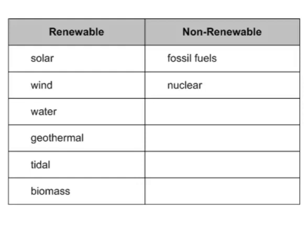Under renewables we have solar power — as long as the sun keeps shining, we've got solar power. Wind is renewable; the wind keeps blowing, we keep making power. Water likewise. Geothermal, tidal energy, and biomass are all renewable. Now, they may not be constant — for example, it's not always windy, so you can't always use a wind turbine. So there are some downsides to these.